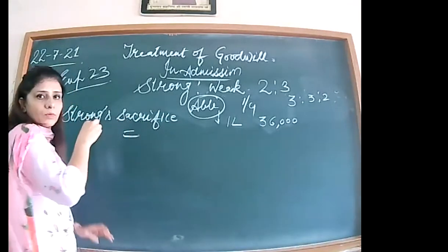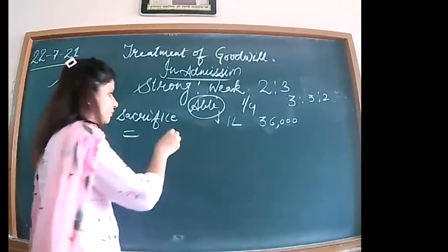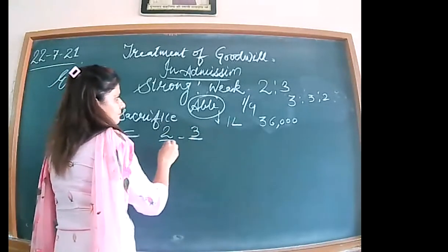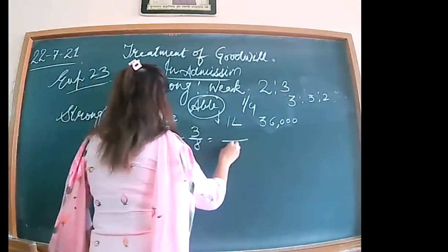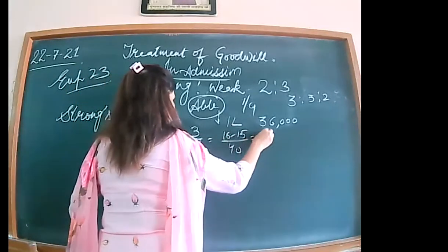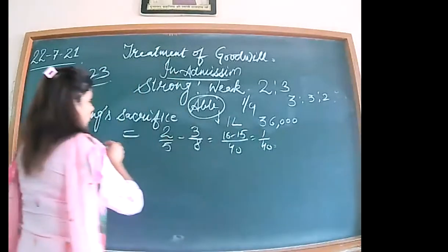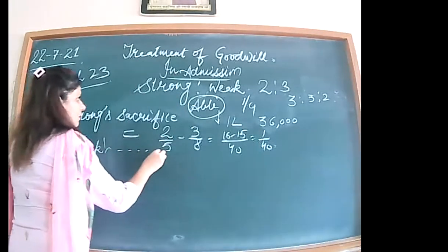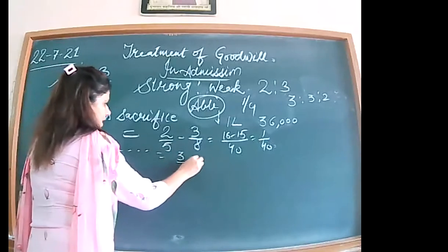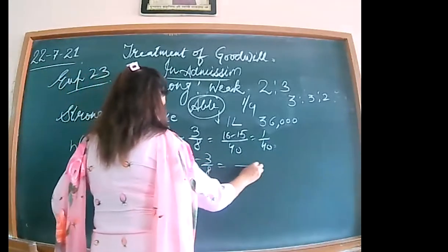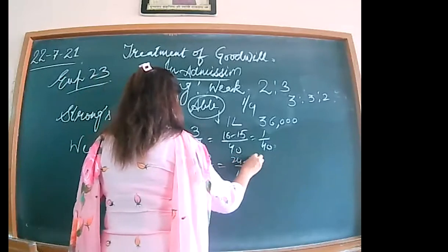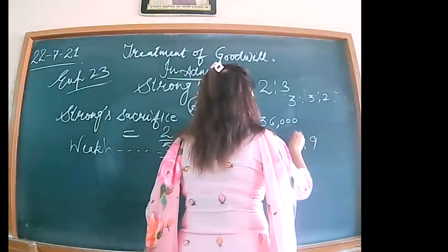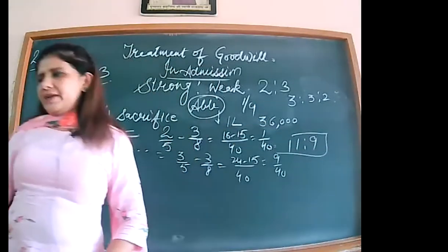Strong's sacrifice equals old minus new: 2/5 minus 3/8, with LCM 40, gives 16/40 minus 15/40 = 1/40. Weak's sacrifice: 3/5 minus 3/8, with LCM 40, gives 24/40 minus 15/40 = 9/40. So the sacrificing ratio comes to 1 is to 9.